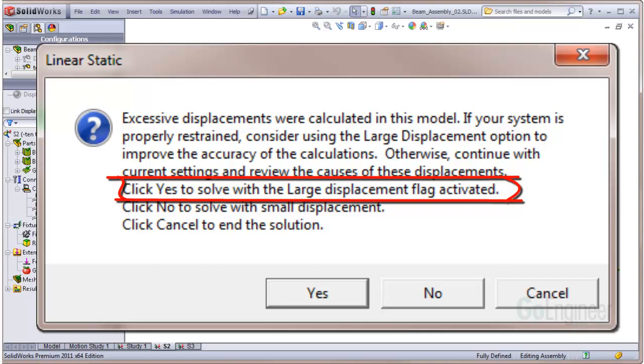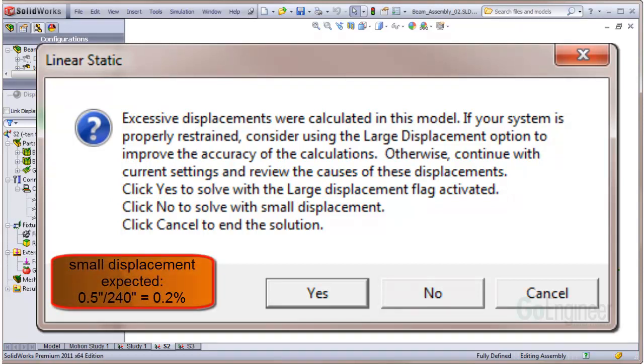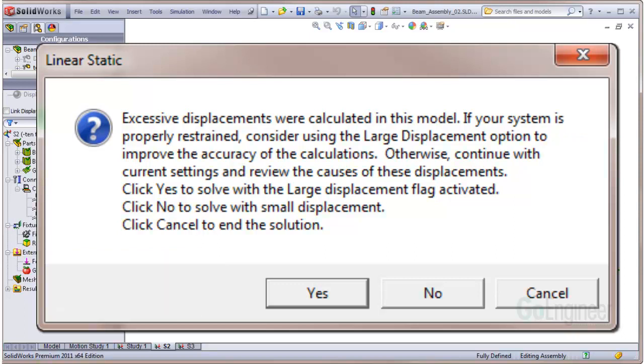This term, large displacement, is synonymous with non-linear. However, for this case, we're expecting less than half an inch displacement over a 20-foot span. That ratio of half an inch over 240 inches is only 0.2%. That value falls well within linear analysis theory using the small displacement assumption. So we wonder what's up and read further.